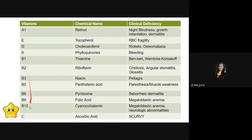Vitamin C is also known as ascorbic acid, and a clinical deficiency of vitamin C or ascorbic acid can cause scurvy — which is a recall question. Key things to know from this vitamin table: know which are fat-soluble vitamins — ADEK — know the chemical names of each vitamin, and know what diseases or conditions result from deficiency of each vitamin.